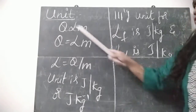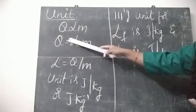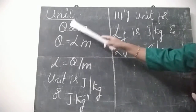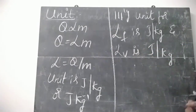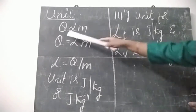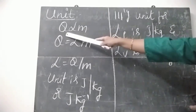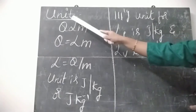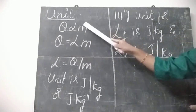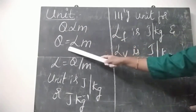Now the unit. The amount of heat required to convert one state to another state is called latent heat. That amount of heat energy is represented by Q. Q is directly proportional to M.